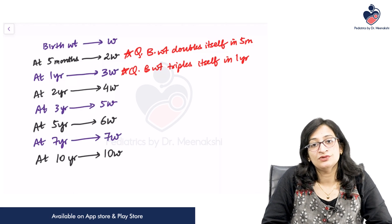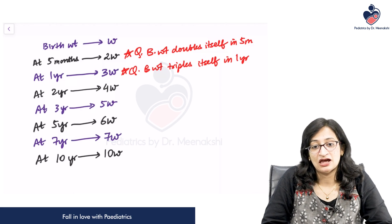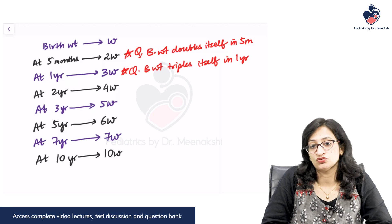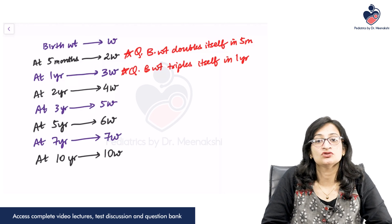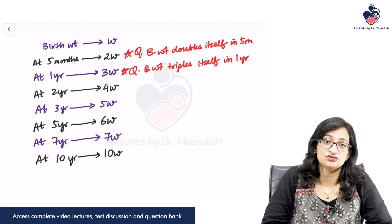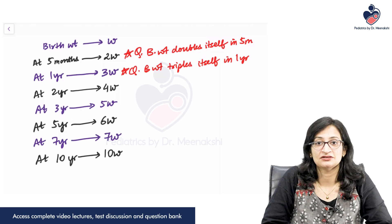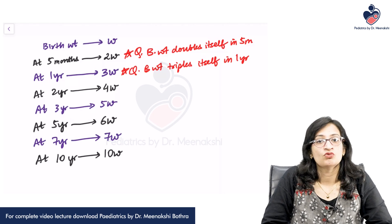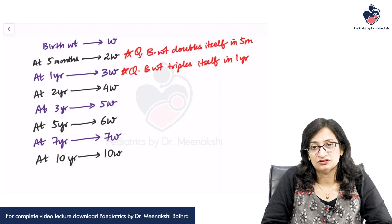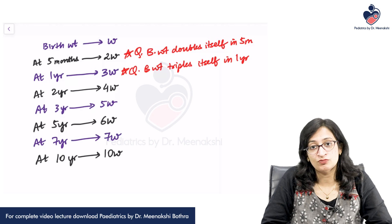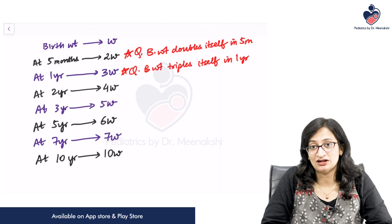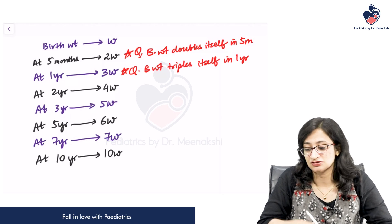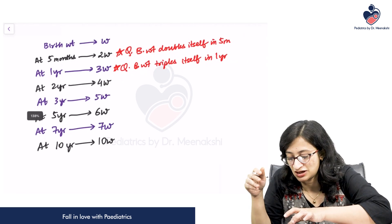That is how the weight of a child increases as the child grows up. In this way, you can know the expected weight at different ages if you know the birth weight. What if you do not know the birth weight? There are some simple formulae which you can use to know the expected weight of a child at different ages.